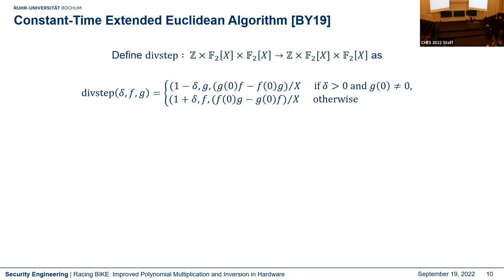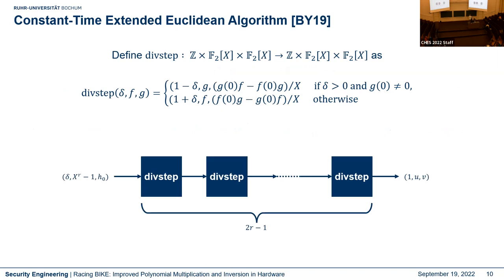The traditional extended GCD is not constant time because it depends on secret inputs. This problem was solved in 2019 by Bernstein and Yang, who proposed a constant-time extended Euclidean algorithm using a divstep function that uses the degree difference of two polynomials f and g. For BIKE, we initialize it with delta equal to one and the two polynomials x^r - 1 and h0, and we have to perform 2*(r-1) divsteps to obtain the inverted polynomial.